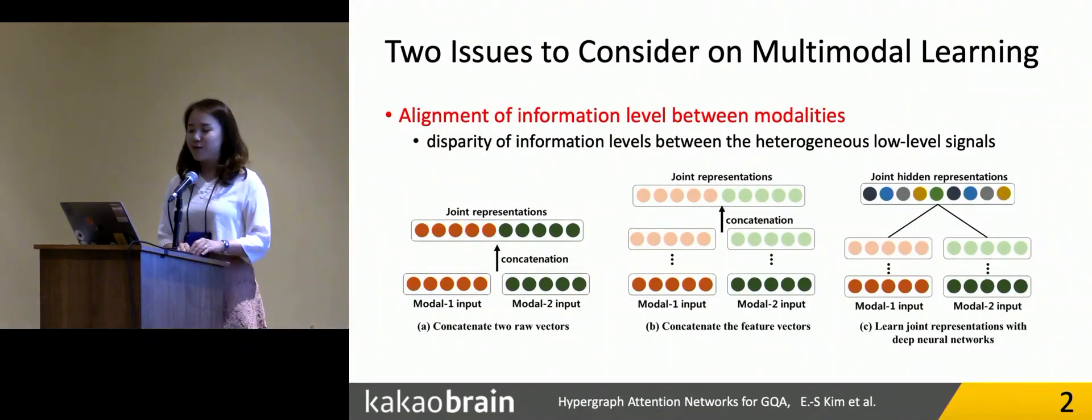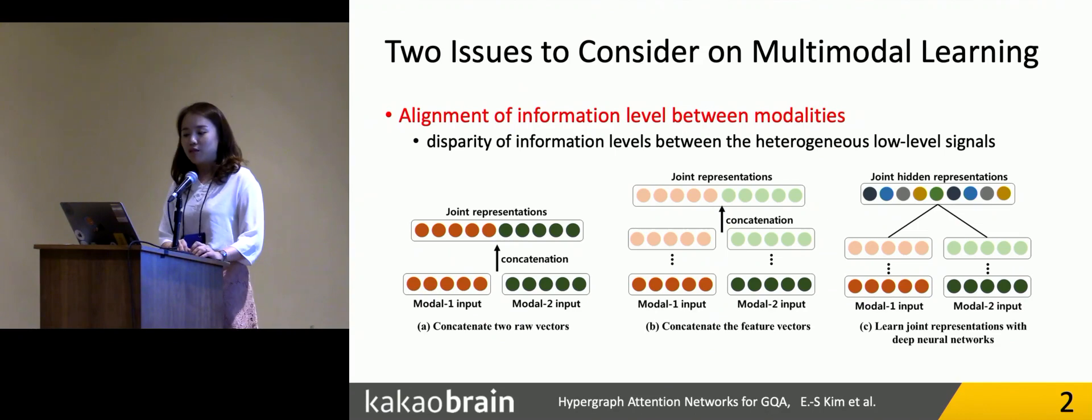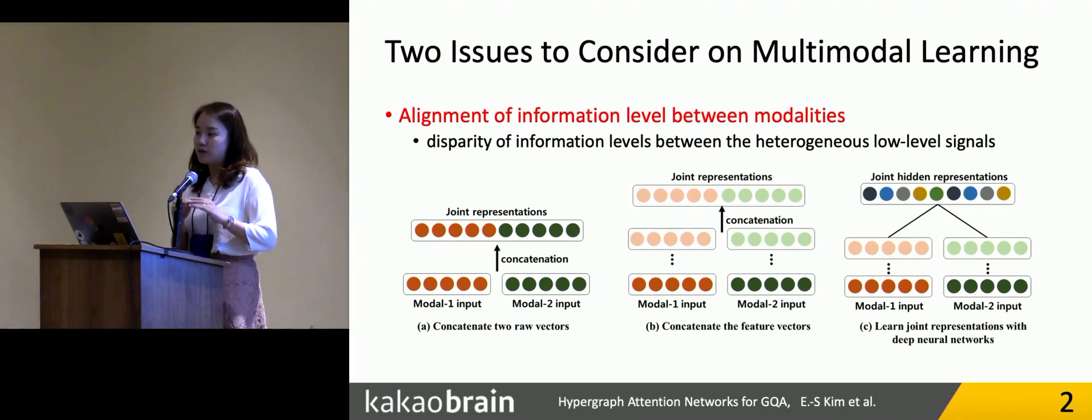We have been trying to solve two fundamental problems of multimodal learning tasks. The first problem is to align the information level between modalities. As you already know, each low-level signal from the multimodal inputs is usually preprocessed using their own preprocessing method, and the low-level signals are presented in feature vectors, and those feature vectors are combined into the joint representation.